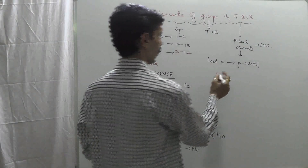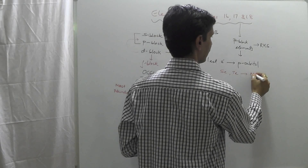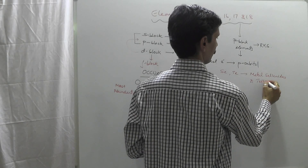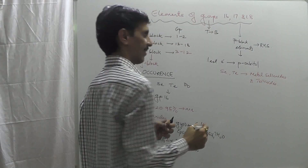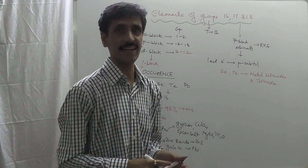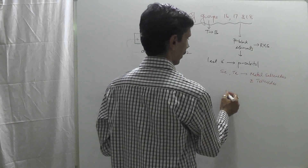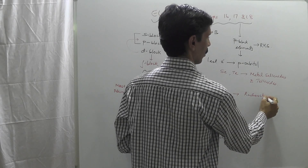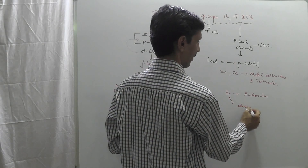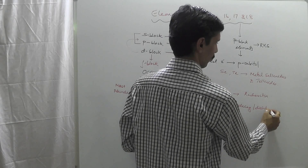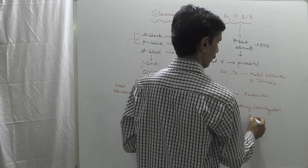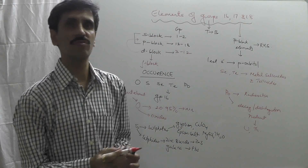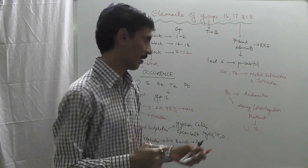When we talk about selenium and tellurium, they also exist in the form of metal selenides and tellurides — they combine with metals in this way. As for the last element, polonium, it is radioactive. It is a decay product — a disintegration product — of radioactive elements such as uranium and thorium. When their decay or disintegration occurs, polonium is obtained.